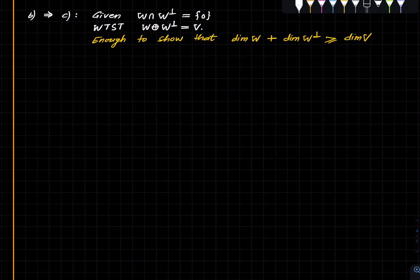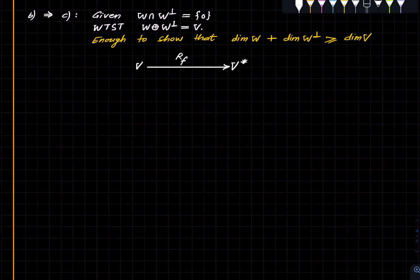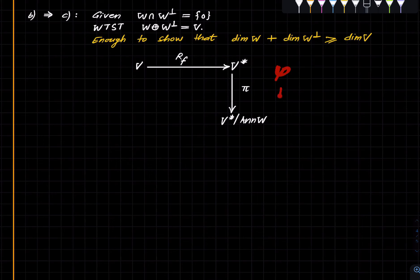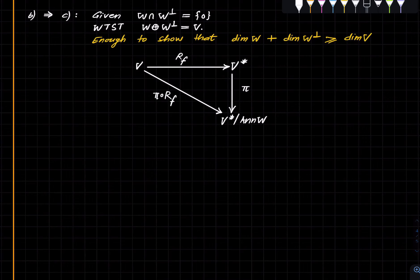It has an interesting piece of reasoning involved. We consider this map R_F going from V to V star and we take the projection from V star to the quotient. This is just taking some functional to the corresponding coset. We have this composition: I compose phi with R_F. We apply rank nullity to this guy.